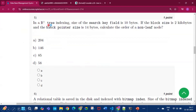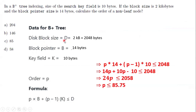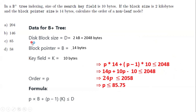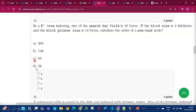Question 5: In a B-plus tree, the search key field is 10 bytes, block size is 2 KB, and block pointer size is 14 bytes. To find the order p of a non-leaf node, use: p × 14 + (p − 1) × 10 ≤ 2048 bytes. Solving gives p ≤ 85.75, so the order is 85. Option C is the answer.